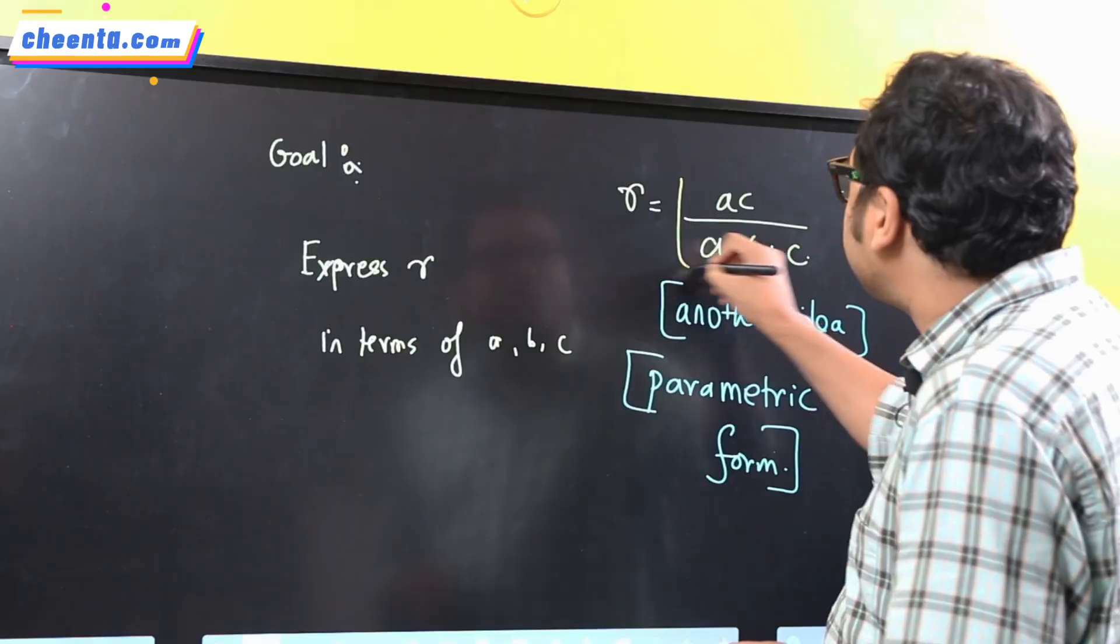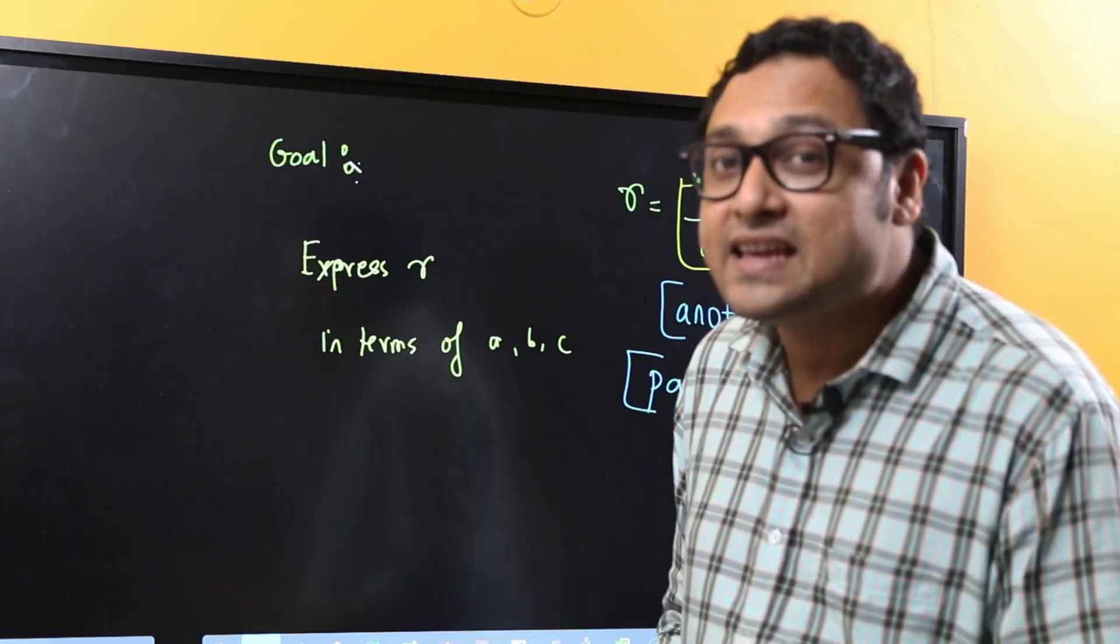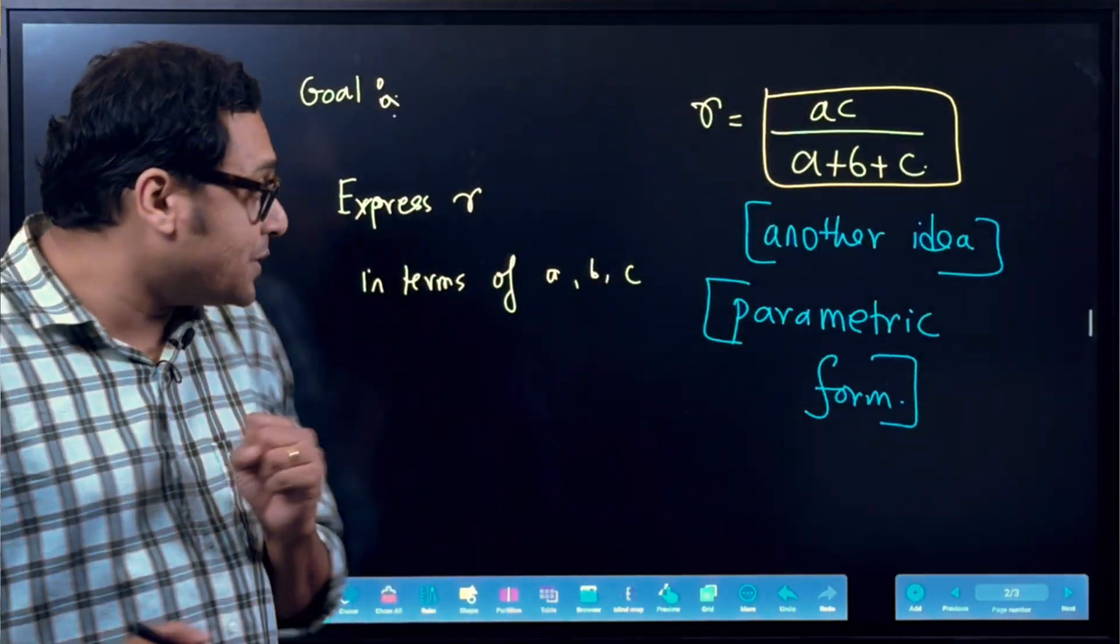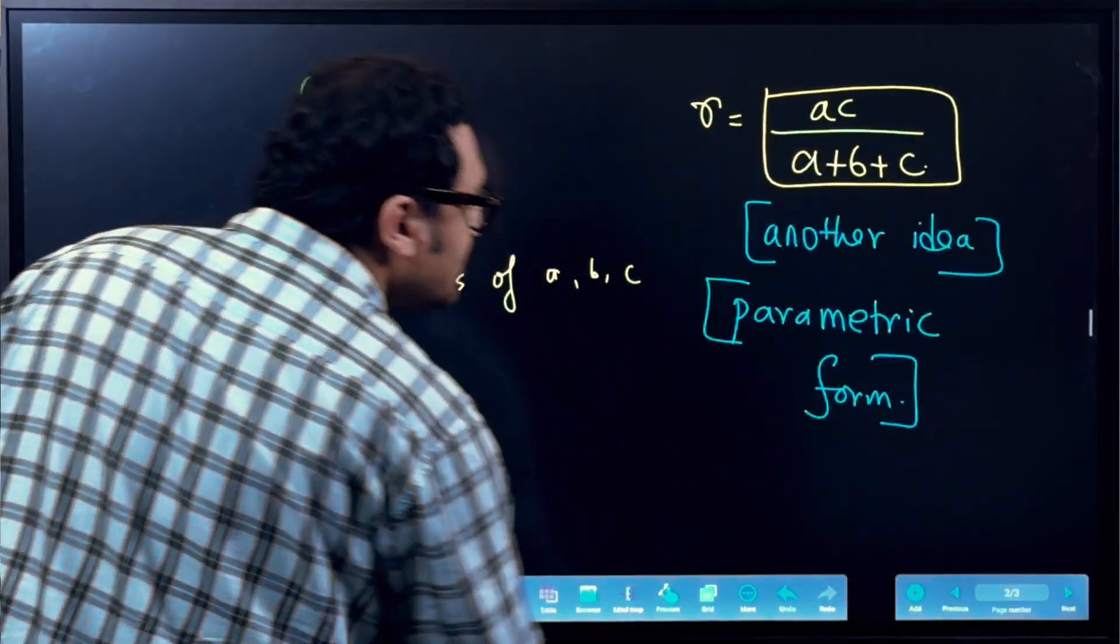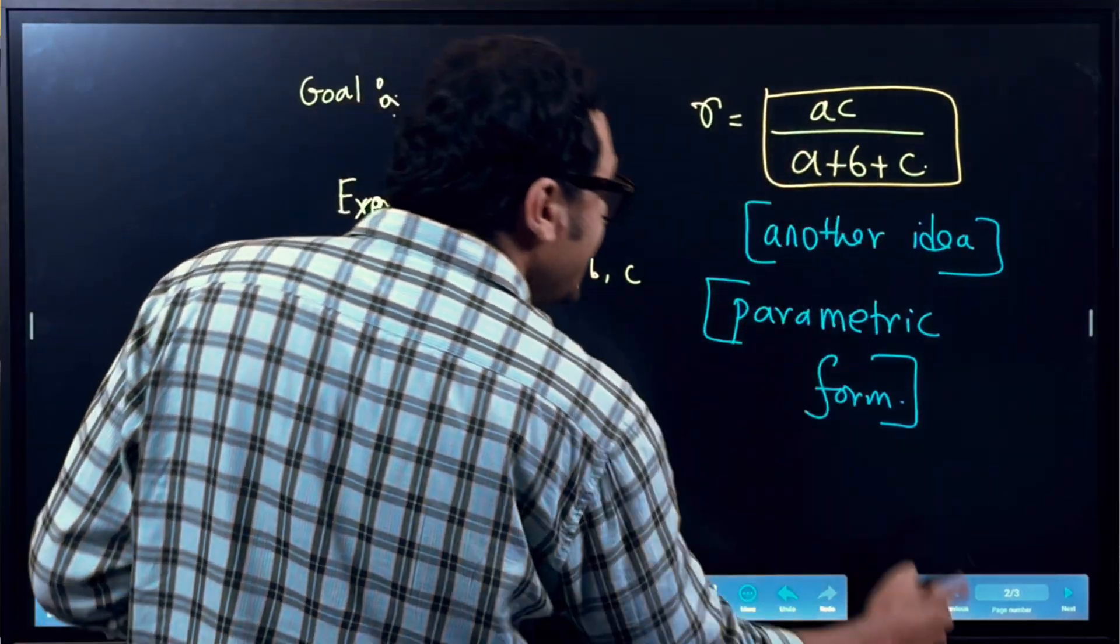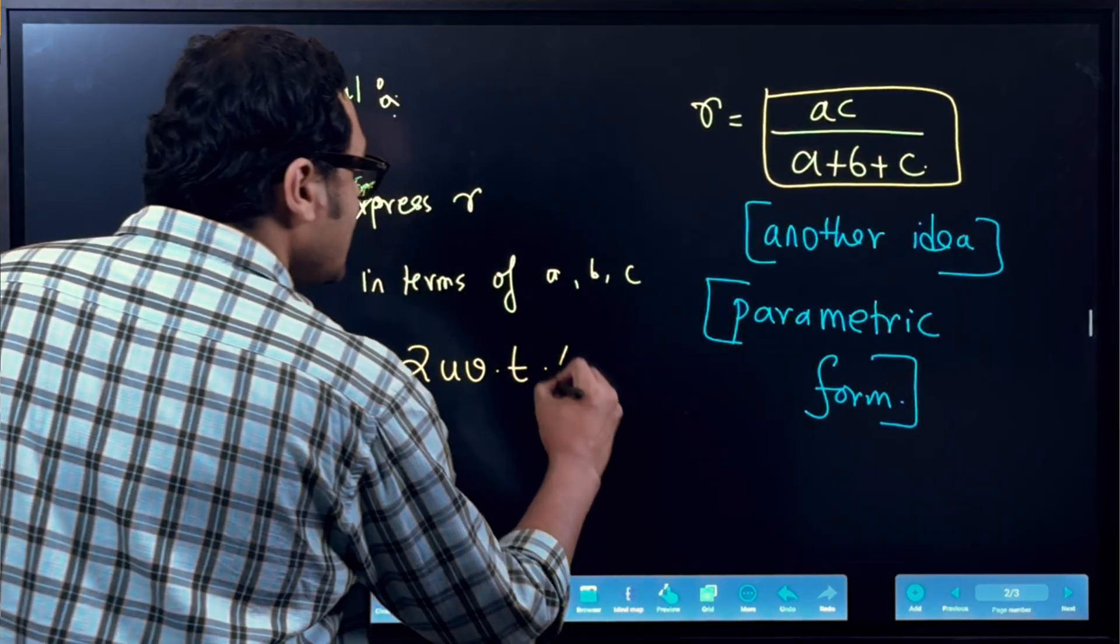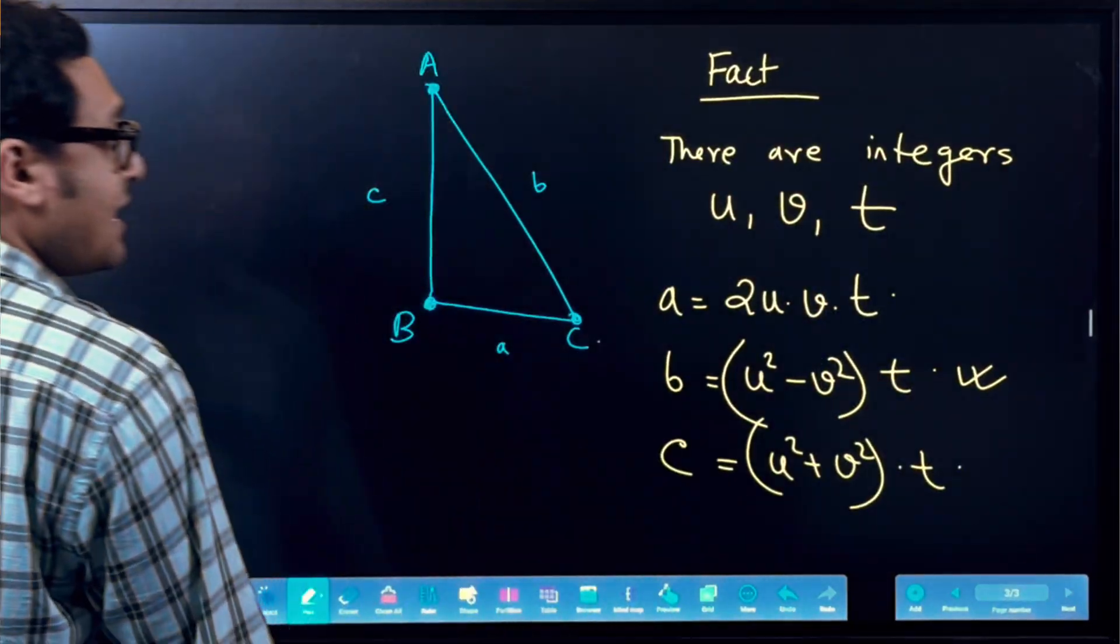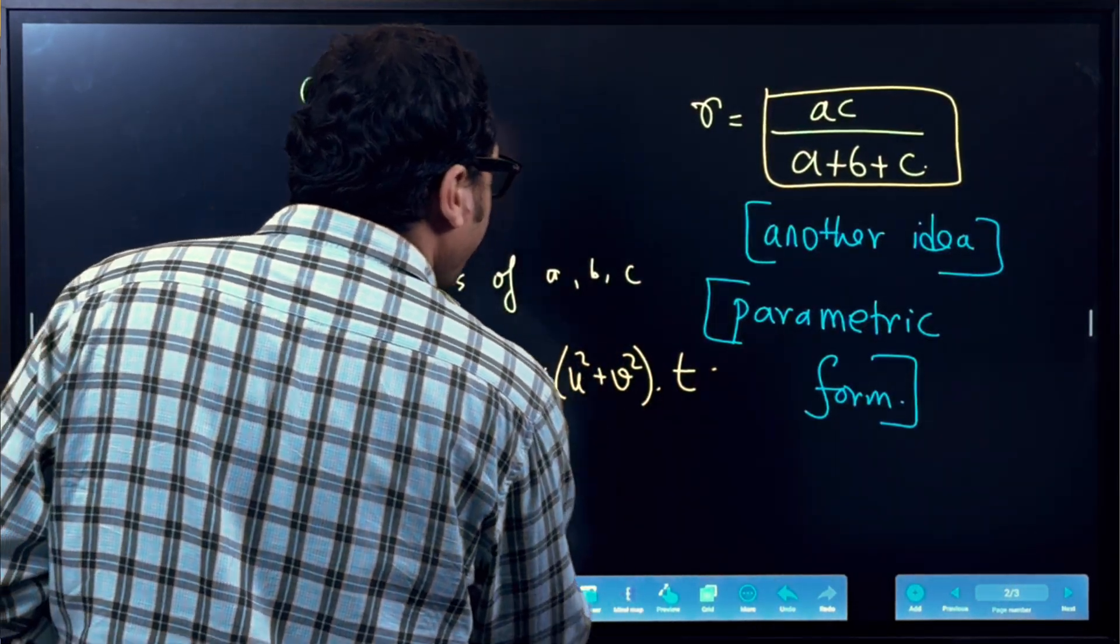So I want to express this in terms of U, V, and T. I want to see whether that makes it an integer or not. Okay? Let's do the calculations. So what we'll do is we will write A as A is 2UV times T, 2UV times T, C is U square plus V square times T, and divided by A plus B plus C.